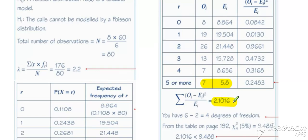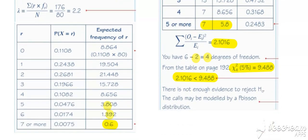So we get our goodness of fit value to be 2.1 degrees of freedom. You're taking away two because we estimated lambda critical value for the chi-squared four, five percent level. And then we can compare our goodness of fit stat with that critical value. And in this case, there is not enough evidence to reject H0. The calls may be modelled by a Poisson distribution.